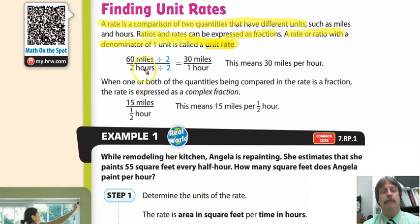They give you an example where they have 60 miles over two hours. The way we can find our unit rate is we do division, because remember, a fraction is a division problem. So 60 divided by two, the units stay. 60 miles every two hours is equivalent or proportional to 30 miles every one hour.